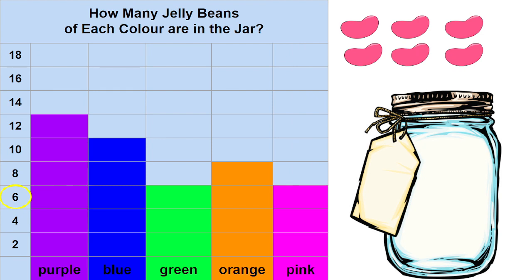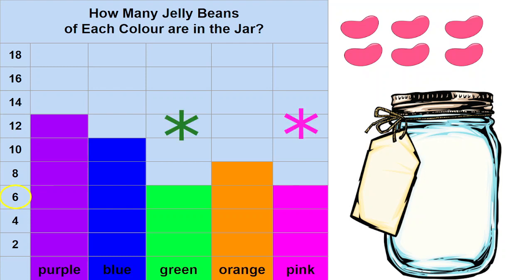Graphs are a great way to be able to see information very quickly. Let's take a look at this graph. Can you see which color of jelly bean we had the most of? That's right, it was the purple jelly bean. Which color did we have the fewest jelly beans? You're right, it was green and pink — they were tied at 6. Which color had 2 more jelly beans than the green? Did you say orange? Well done.